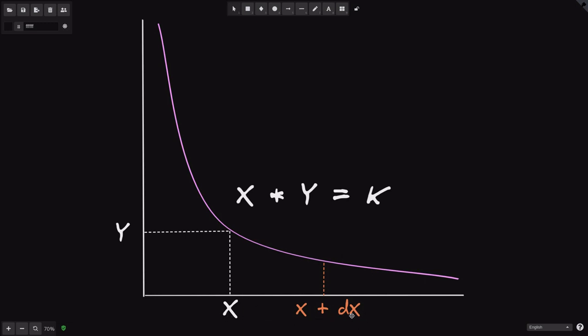Here is the original X. DX is the amount of tokens that we're selling. And the Y value corresponding to this X value on this X times Y equals K curve will be over here.